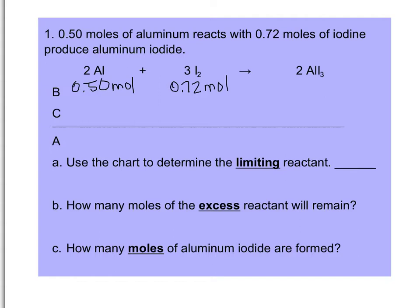I'm going to assume aluminum runs out first. I take my 0.5 moles of aluminum, divide by 2, then multiply by 3 to find how much iodine would react if all the aluminum were used. That gives 0.5 ÷ 2 = 0.25, then 0.25 × 3 = 0.75. Putting 0.75 on the change line and subtracting from the 0.72 moles of iodine available, we get a negative number of −0.03.